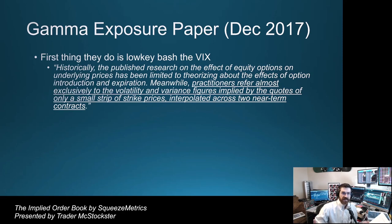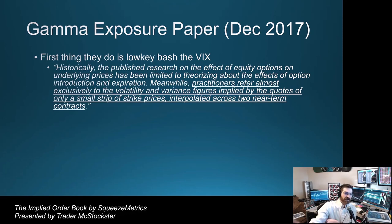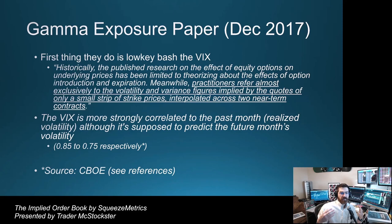So the first thing they do is they kind of low-key bash the VIX — or at least they bash practitioners for overusing VIX. The way I read it, they're almost blown away that we use VIX so much, and it's based off two numbers. The exact quote: historically, the published research on the effect of equity options on underlying prices has been limited to theorizing about the effects of options introduction and expiration. Meanwhile, practitioners refer almost exclusively to the volatility and variance figures implied by the quotes of only a small strip of strike prices interpolated across two near-term contracts. They found the VIX is actually more correlated to the last month's realized volatility — 0.85 and 0.75 respectively — even though it's supposed to predict the future month's volatility.